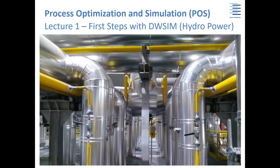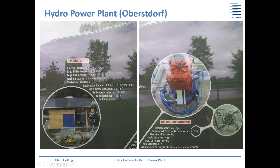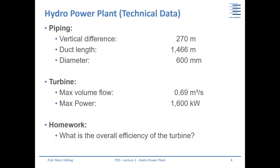This summer I was for one week in Oberstdorf in the Alps, and there I found a quite nice hydropower plant. They gave a lot of information — there was an online screen showing live values of power generated and volume flow through the turbine, and also information boards with a lot of data. Since it's in German, I translated it. The main parameters: elevation of 270 meters, duct length of 1466 meters, diameter of 600 millimeters. For the turbine, maximum volume flow was 0.69 cubic meters per second and maximum power was 1.6 megawatts (1600 kilowatts).